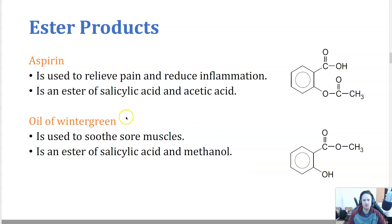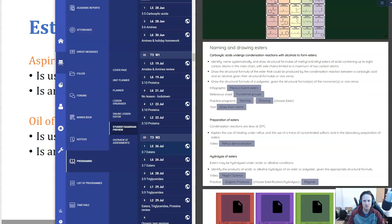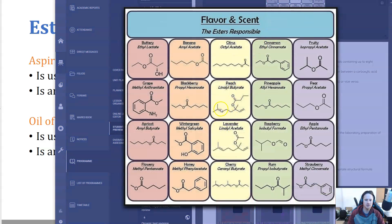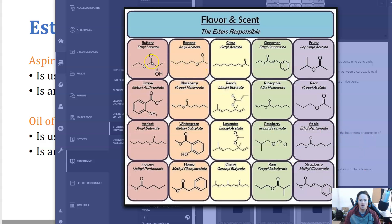So products of esters. Aspirin is the product of an ester. It's used to relieve pain and reduce inflammation. And it's an ester of salicylic acid and acetic acid. Oil of wintergreen is an oil that's used to soothe muscles. And it's an ester of salicylic acid and methanol. I'm just going to show a few more esters and basically what they do. Esters are responsible for fruity scents and smells.